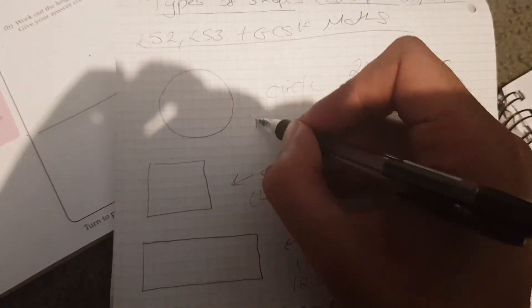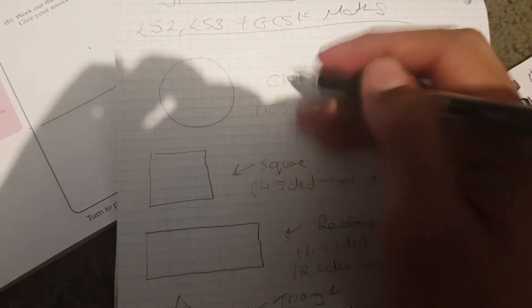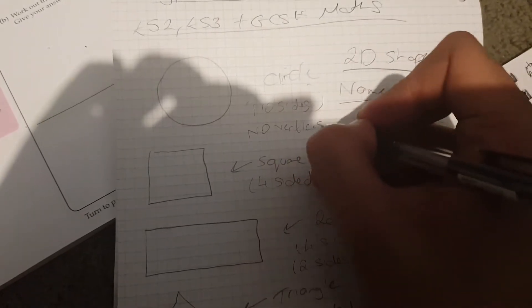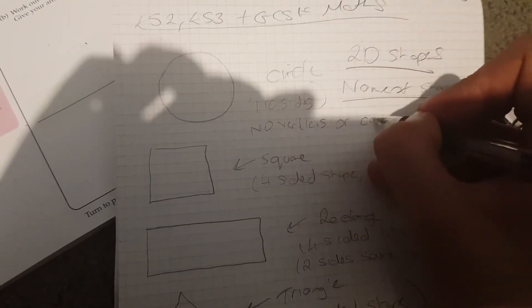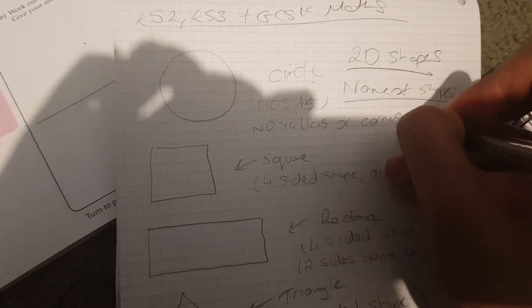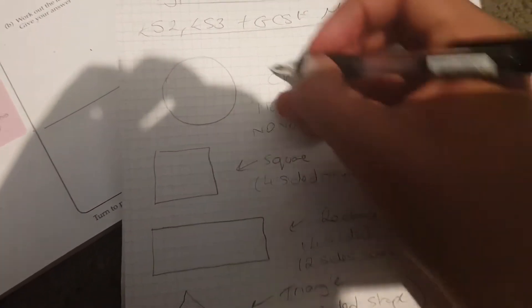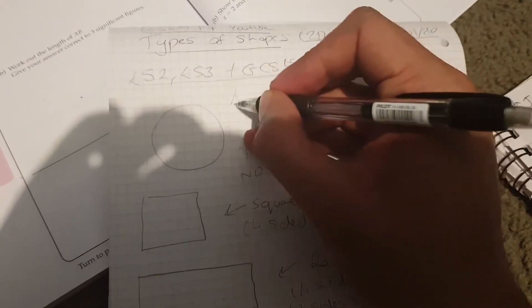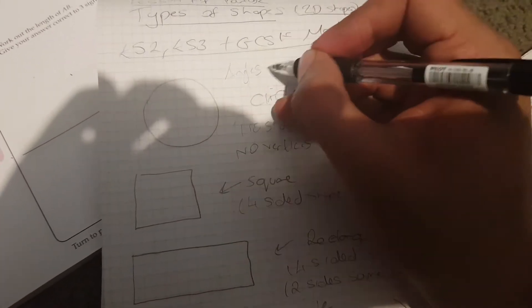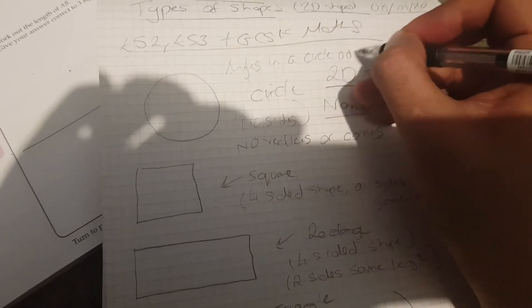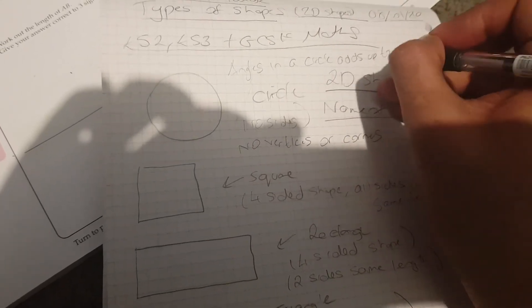So a circle's got no sides. That's the definition of a circle. There's no sides, there's no vertices or corners. And angles in a circle add up to 360.